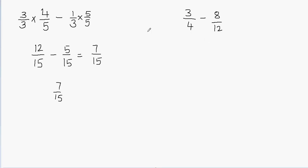Now let's look at the second example. You can use the same method and multiply both fractions by each other's denominator, but here we have a different case. You can see that 12 is a multiple of 4. When one fraction's denominator is a multiple of the other fraction's denominator, instead of multiplying both fractions by each other's denominator, we can just multiply one fraction to make the denominators equal.